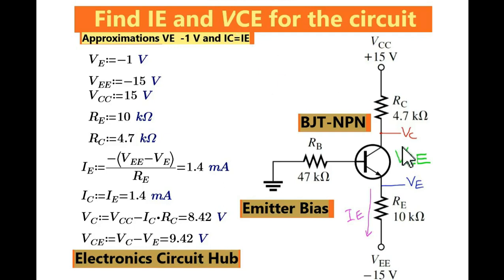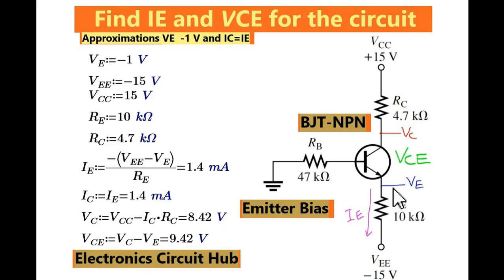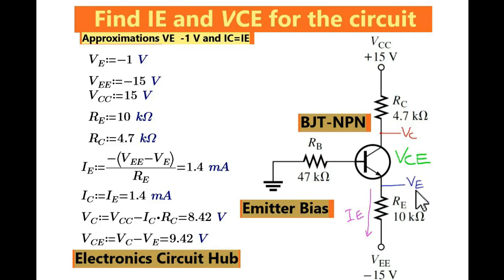Let us try to find out the value of IE first, then later we will find the value of VCE. Since the current flows, you can see this IE current flows through resistor RE. That is why there is a voltage drop across this resistor. The voltage drop across this resistance, since the current IE is flowing through it, is given by VE, that is the emitter voltage. So VE equals IE times RE.